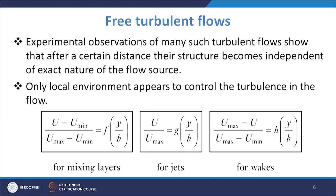In the case of the mixing layer, (u − u_min) / (u_max − u_min) is a function of y/b, where y is in the cross-stream direction and b is the cross-stream layer half-width. For wakes, (u_max − u) / (u_max − u_min) = f(y/b). These formulas describe how velocity varies with u_max, u_min, and y/b across these different free turbulent flow configurations.